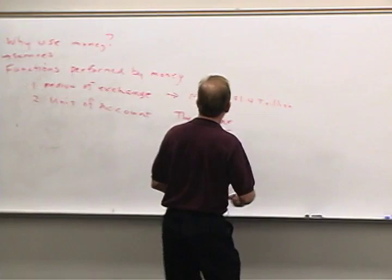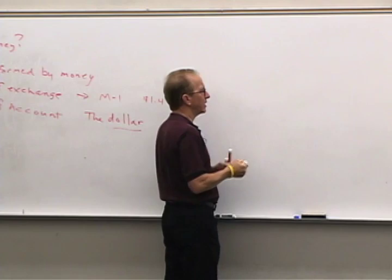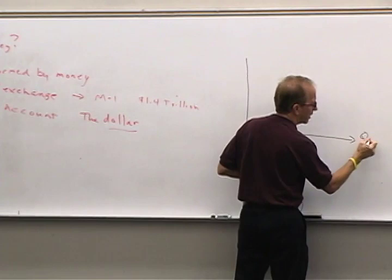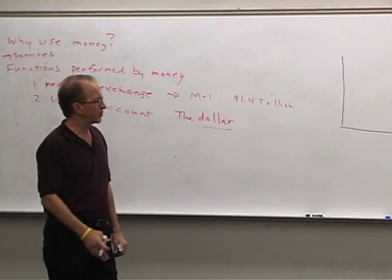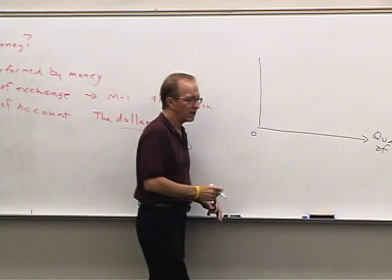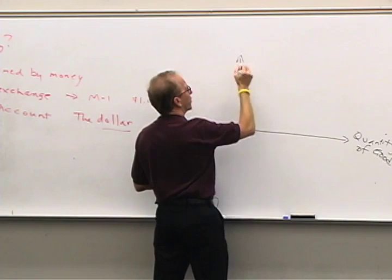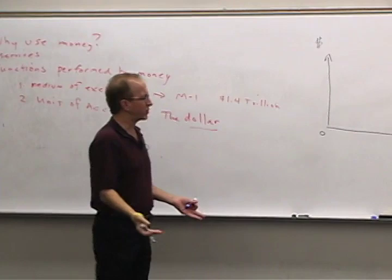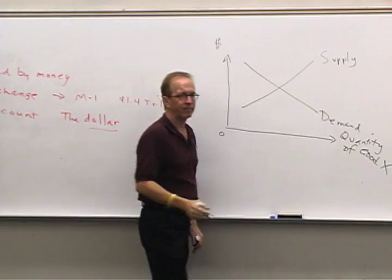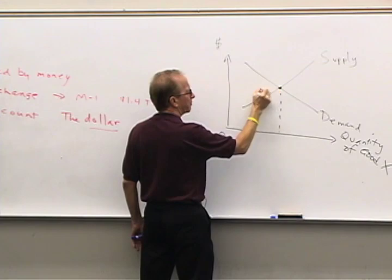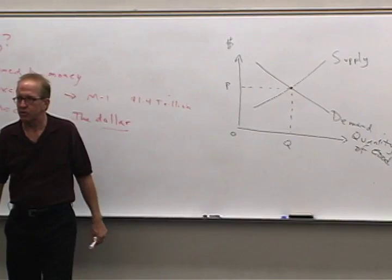Let me draw a graph showing transaction costs and the role they play in the economy. We'll take some typical representative good — good X — whether it's hamburger, cars, or houses. On the horizontal axis we measure that good; on the vertical axis, a dollar sign. You've studied this before — there's a supply curve and a demand curve, and we find an equilibrium with quantity Q and price P. When you learned that in principles of macro or microeconomics, they assumed money exists in the economy.